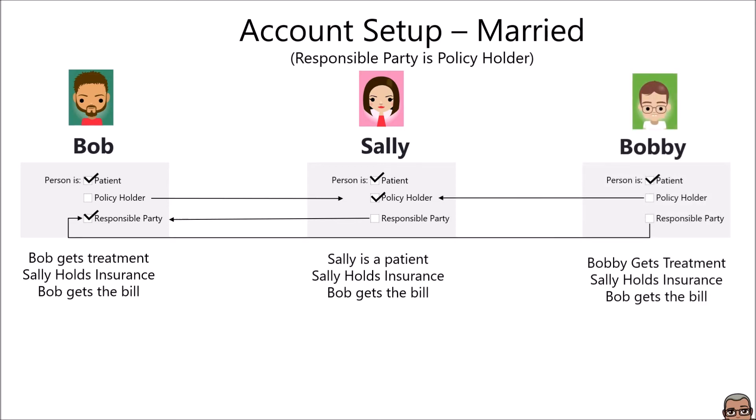Now let's throw another piece to this puzzle — they have a child, Bobby. Bobby is a patient, the policyholder is still Sally since she holds the insurance, and the responsible party is Bob — he gets the bill. Bobby gets treatment, he's a patient, Sally holds the insurance, and Bob gets the bill. All we have to do is connect those dots: who gets the bill, who holds the insurance.